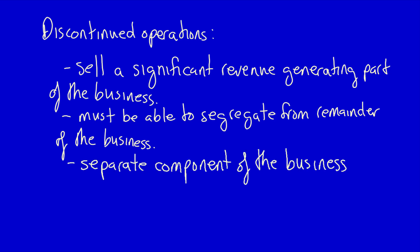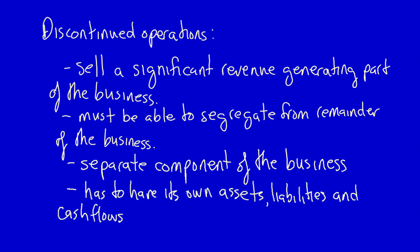What does that mean? It means that it has to generate its own net cash flows and be separable from the remainder of the company. Why is this so important? How could we separate discontinued operations from continuing operations if we cannot determine all the assets, liabilities, and cash flows from this particular component of the business? It's not possible. So in order to report itself separately, it has to be separable from the remainder of the business.